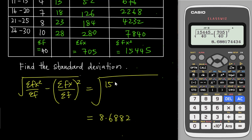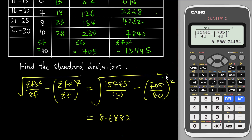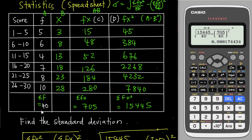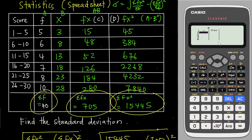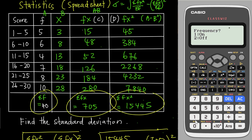To check whether the answer is correct, the statistics button on this calculator can verify all the values and the final standard deviation of 8.6882. Go to Menu, then Statistics (number 6), then One Variable. Make sure you have frequency enabled — if not, go to Shift Menu, come down to Statistics (number 3), and turn it on.